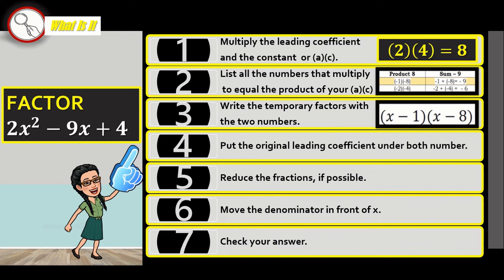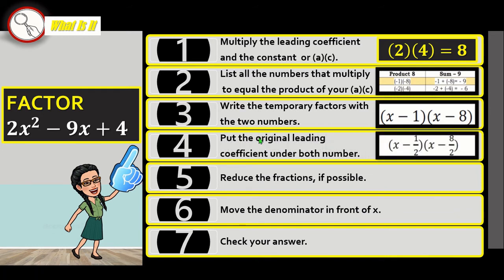You write the temporary factors like so: the negative 1 and the negative 8. And then next step, you are going to put the original leading coefficient under the numbers: 1 over 2, 8 over 2.